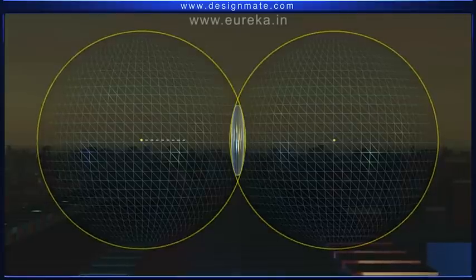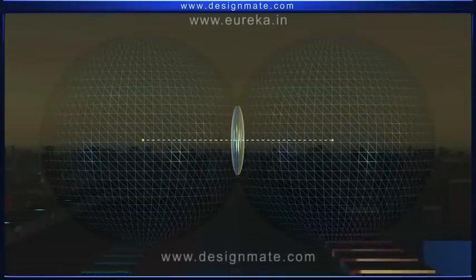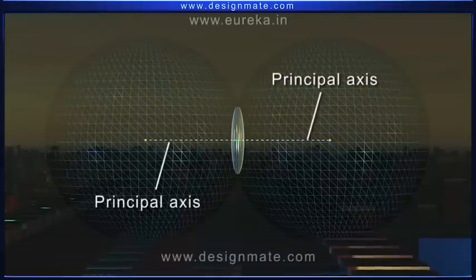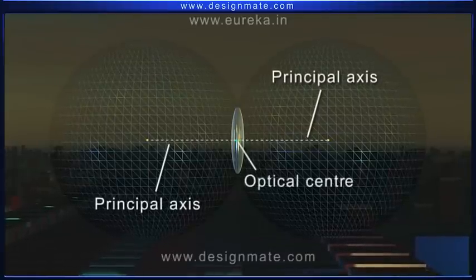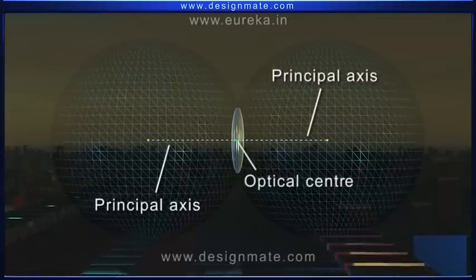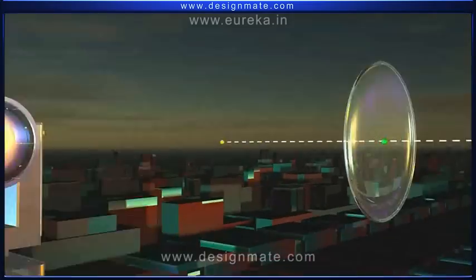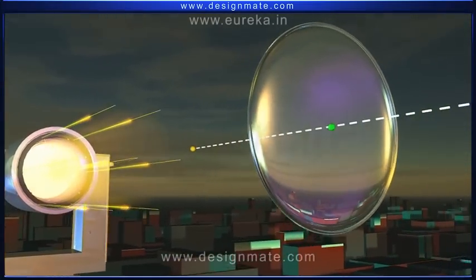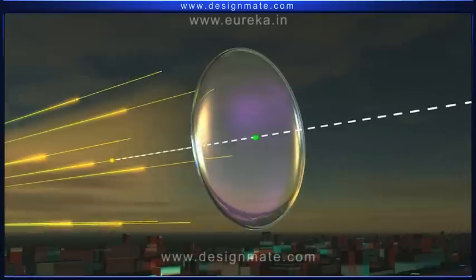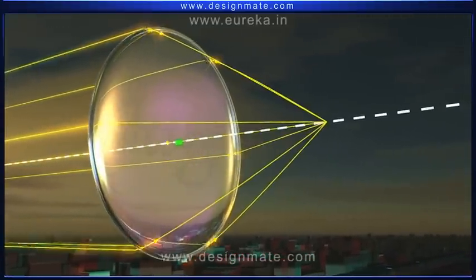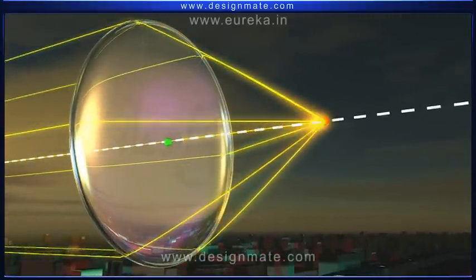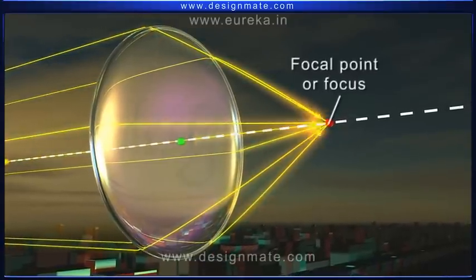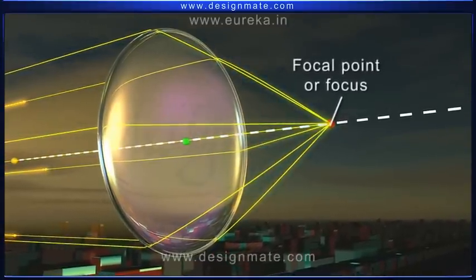The line joining the center of curvature on both sides of the lens is known as the principal axis, which passes through the optical center of the lens. The light rays parallel to the principal axis and incident on one side of the lens undergo refraction and converge at a point on the principal axis on the other side. This point is called the focal point or focus of the lens.